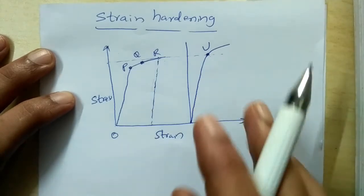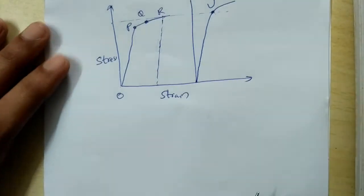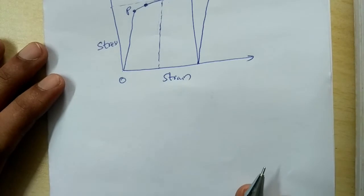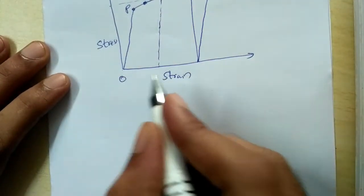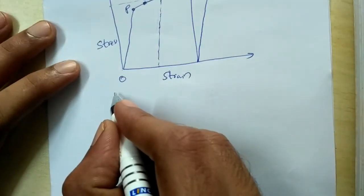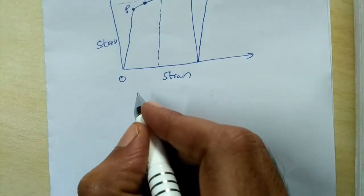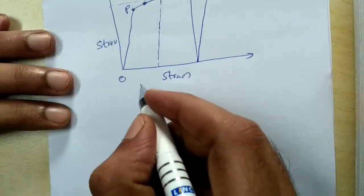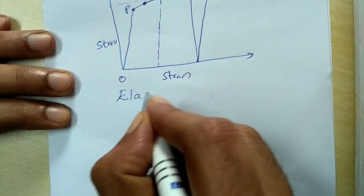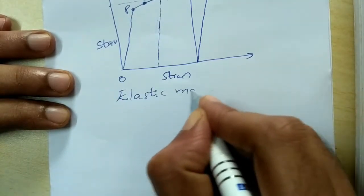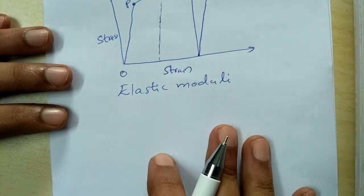Now we'll discuss some terminologies. We have already studied Hooke's law, which states that stress is directly proportional to strain, or stress divided by strain is a constant for a given material. This constant is called the elastic modulus. There are three types of elastic moduli, which we'll discuss one by one.